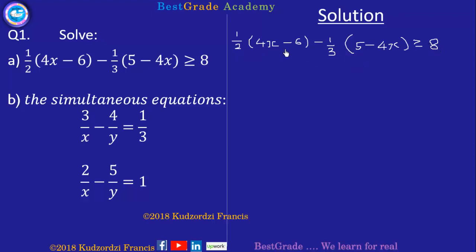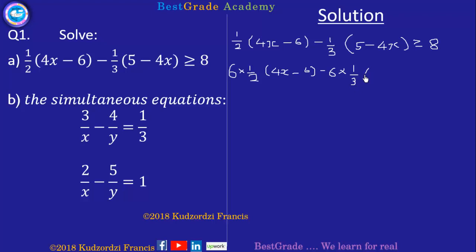We need to find the LCM first. The LCM of 3 and 2 is 6, so we multiply through by 6. That gives us 6 times 1 over 2 into 4x minus 6, then minus 6 times 1 over 3 into 5 minus 4x, which is greater than or equal to 6 times 8.